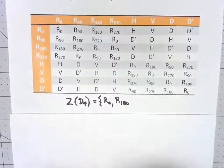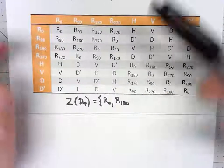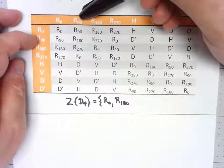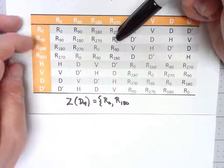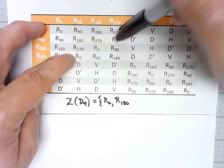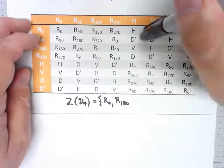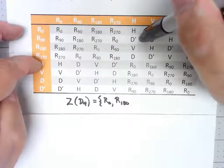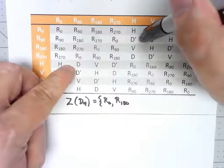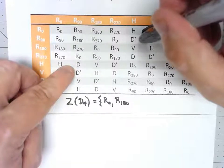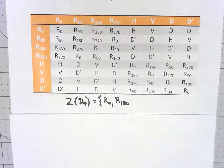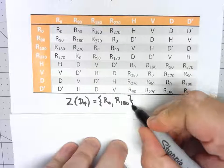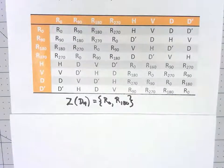Are there anything else? If I look at R90: R90, R180, R270, R0 — those all match. But as soon as I get into here, R90 times H is D', whereas H times R90 is D' — those are different, so it's not commutative. You should go ahead and double check that every other element has something it doesn't commute with. So the center of the group D4 is just R0 and R180.